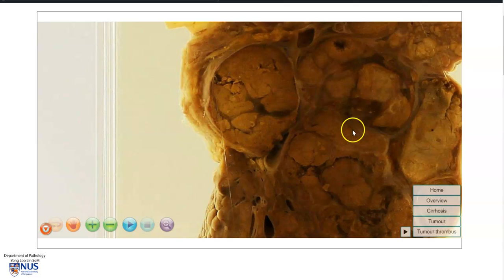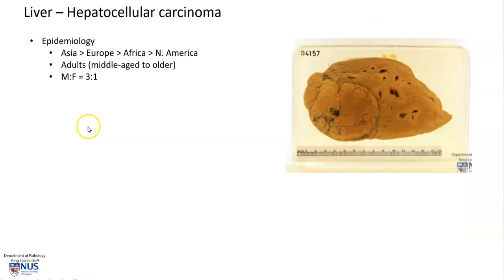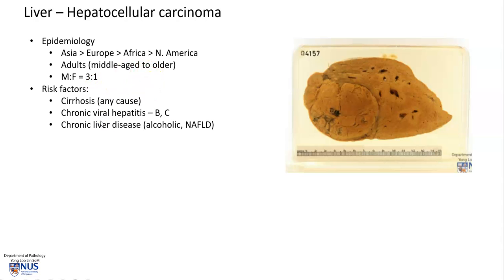Let's learn a bit more about hepatocellular carcinoma. This is a tumor that occurs with highest frequency in Asia. It usually affects middle-aged to older adults with a slight male predominance. Risk factors include cirrhosis, which can be due to any cause, for example alcoholic, hepatitis, etc.